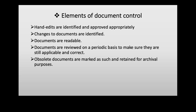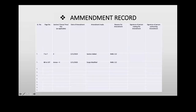Whenever removing an old document, mark it as obsolete and retain it for archival purposes. Whenever hand edits or any changes are made, ensure you make a notation in the amendment record. The amendment record should include the page number, sections where amendments were made, when the amendment was made, what amendments were made, and why — whether due to a new NABL 112 revision, an audit entry, or any other reason. It must also include who made the amendment and the signature of the person authorizing it.